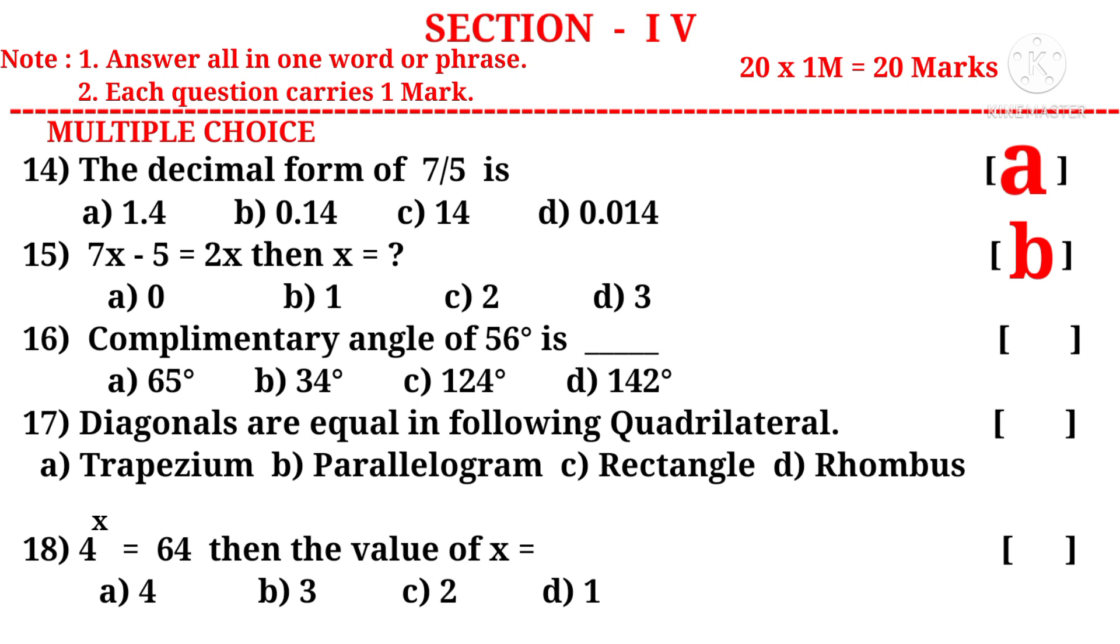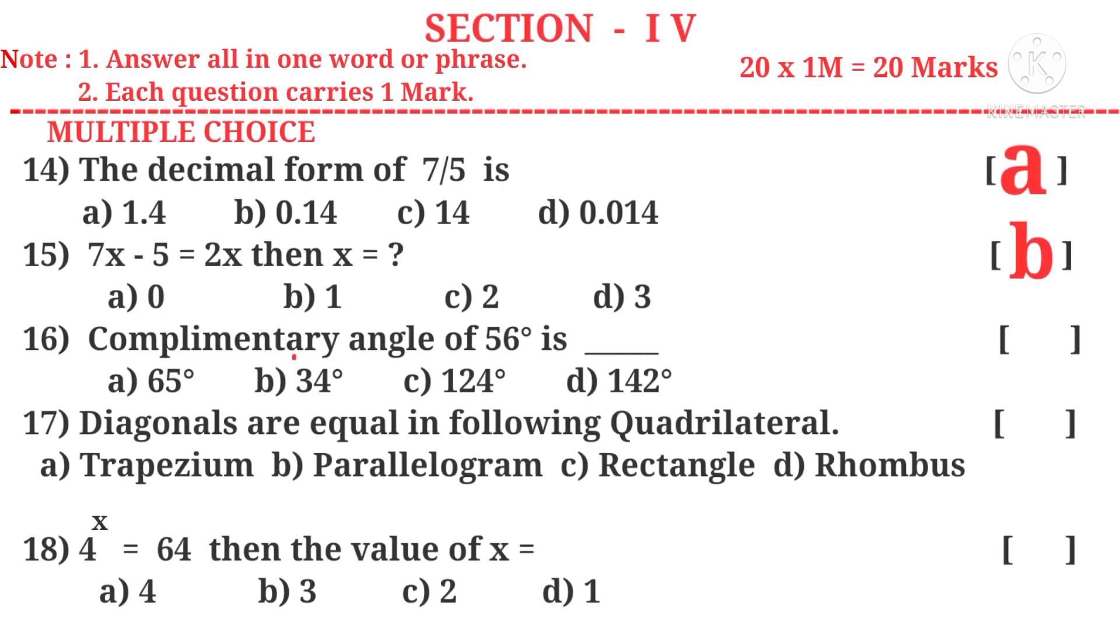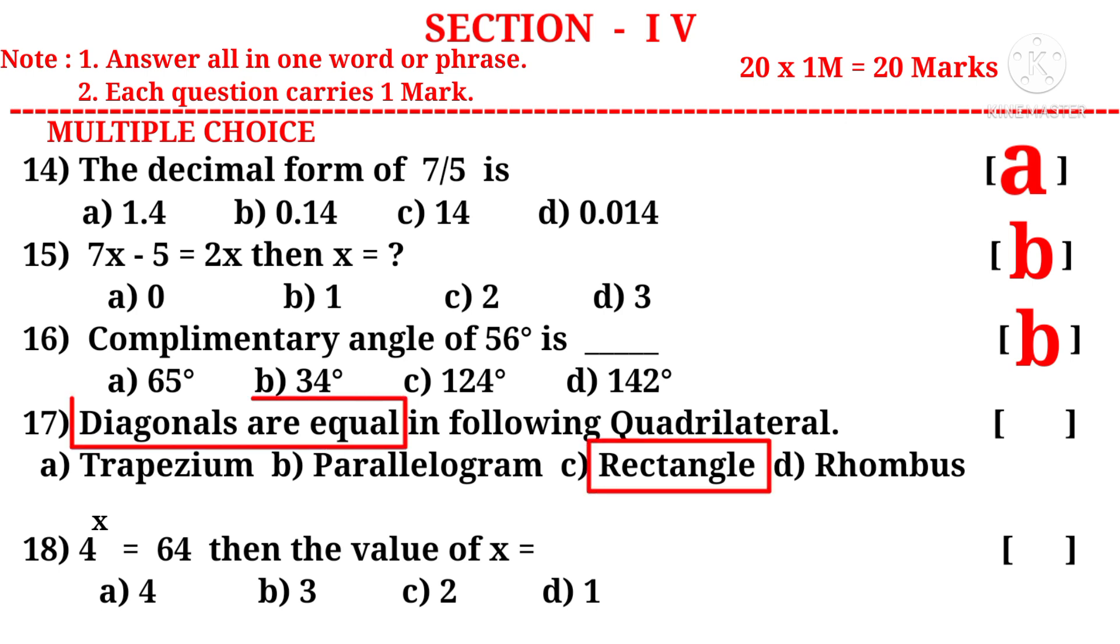Question 16: Complementary angle of 56 degrees is. To know the complementary angle, subtract 56 degrees from 90. That is 34 degrees. The correct choice is B. Question 17: Diagonals are equal in the following quadrilateral. It is rectangle, because rectangle each angle is 90 degrees, so diagonals are equal. The correct choice is C.